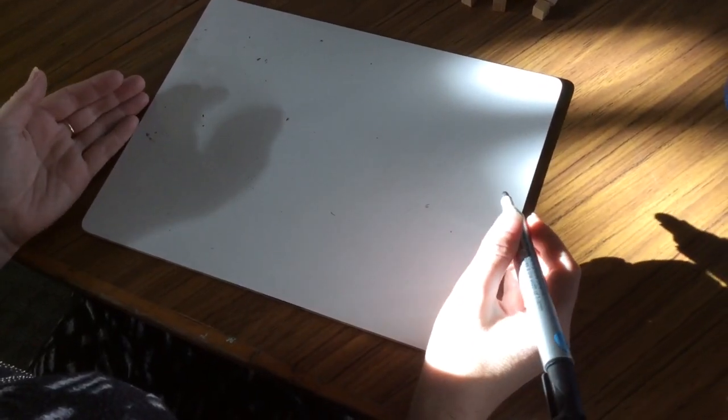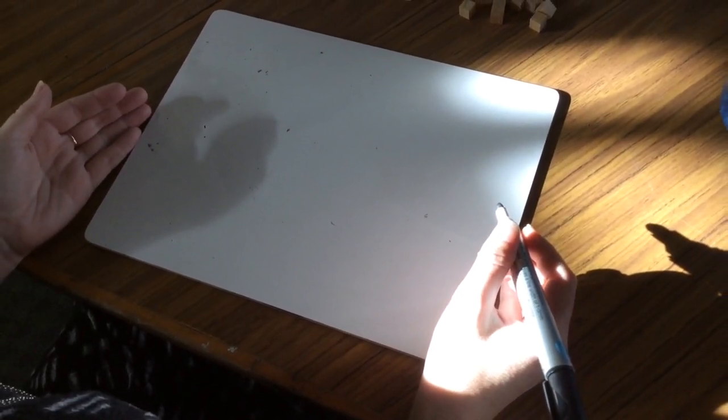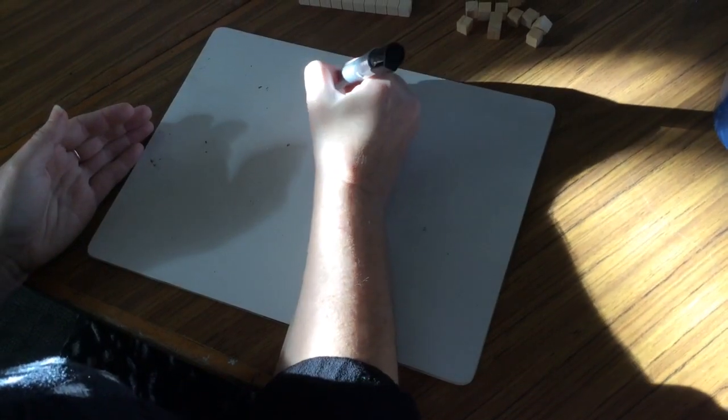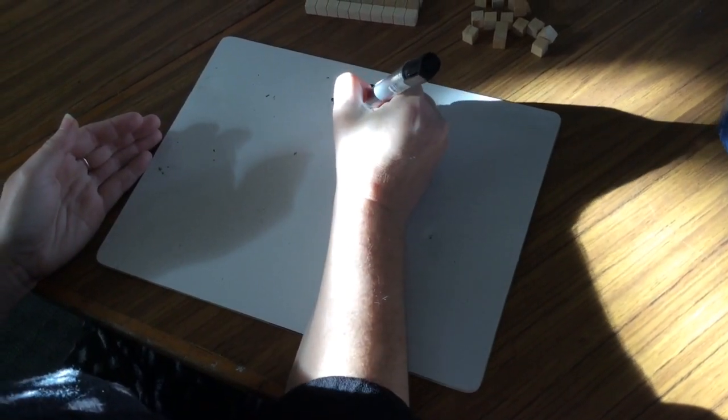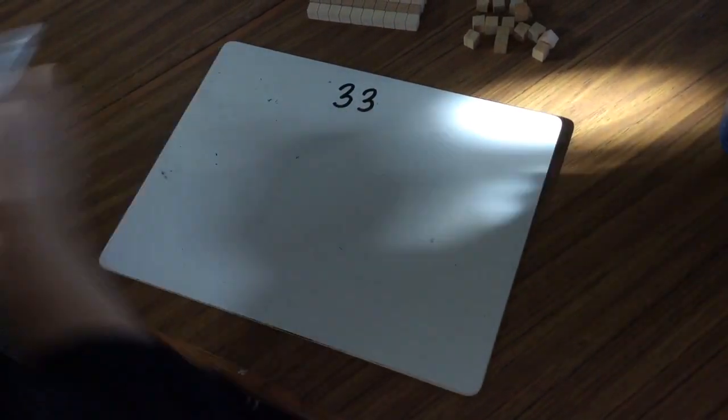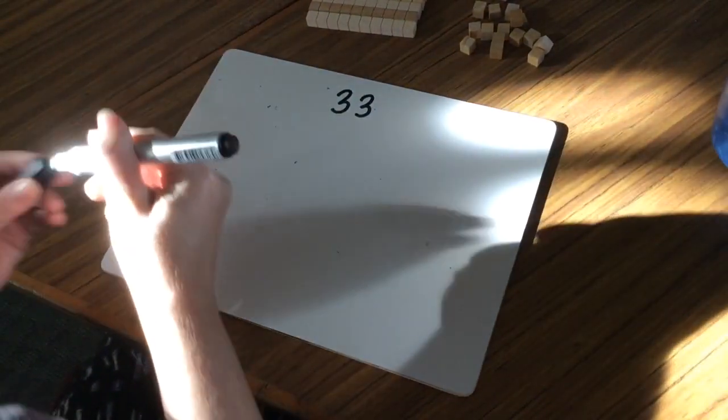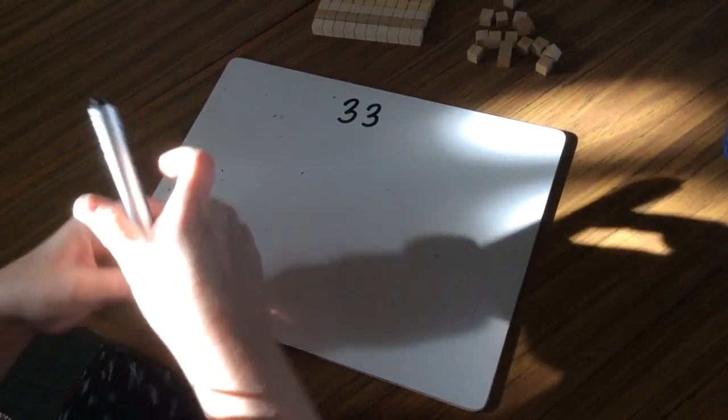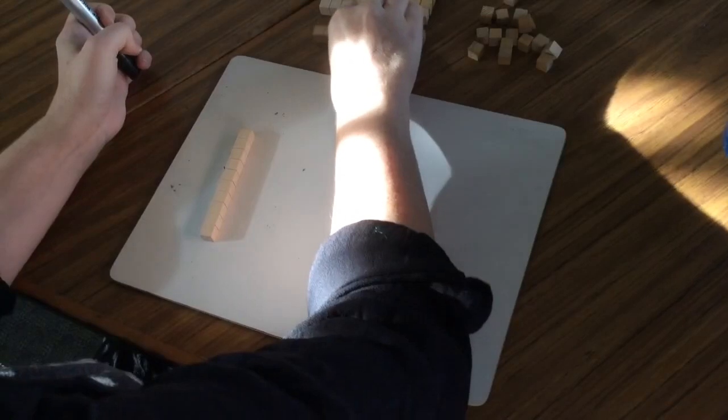Practice partitioning, that means breaking up a number into two or more parts. I'm going to break up the number 33. I've got three tens and three ones, so I'm going to count that number out first: 10, 20, 30, 1, 2, 3.